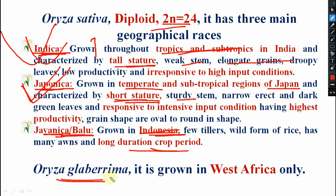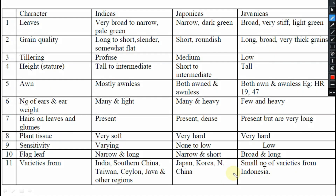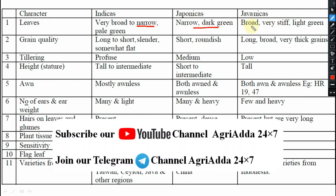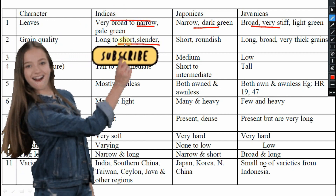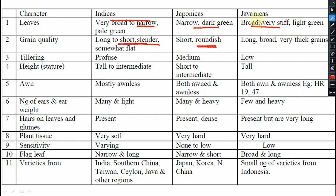Oryza glaberrima is grown in West Africa only. Now the comparative characters of the different subspecies: leaves - in indica, broad to narrow; japonica, narrow green; javanica, broad, very steep and light green. Grain quality - indica is long to short slender; japonica is roundish; javanica has long, broad and very thick grains. Tillering - indica has profuse tillering, japonica medium, javanica low tillering. Height - indica is tall, japonica is short, javanica is also tall. Awns - indica mostly awnless; japonica, both awned and awnless; javanica has many awns with some awnless.